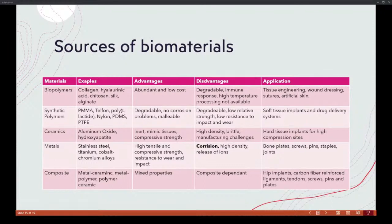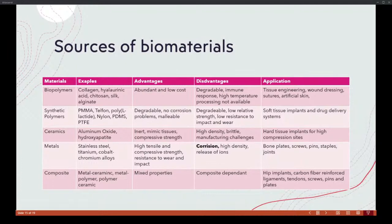Metals — stainless steel, titanium, and cobalt-chromium alloys — are the classic biocompatible metals. Advantages: high tensile and compressive strength, resistance to wear and impact. Disadvantages: corrosion in biological environments, and very high density — much higher than bone — which can be problematic. Despite this, they're used for bone plates, screws, staples, and joint replacements.